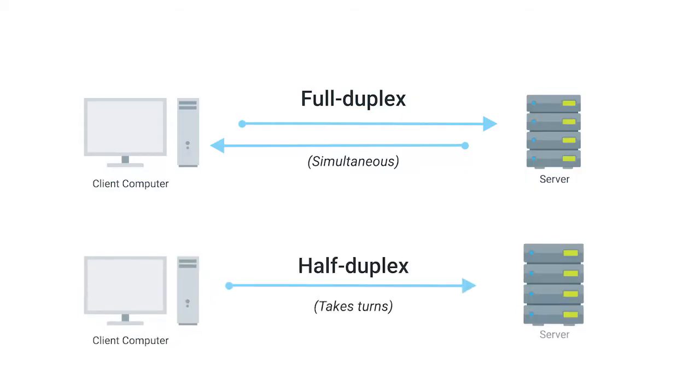If there's something wrong with the connection, you might see a network link degrade and report itself as operating as half duplex. Half duplex means that while communication is possible in each direction, only one device can be communicating at a time.